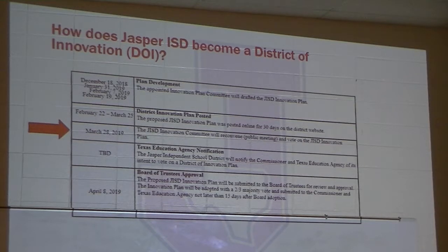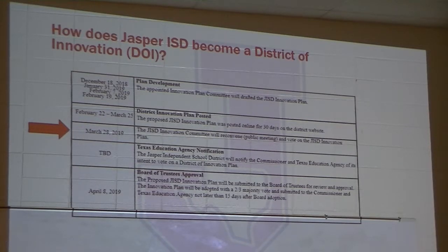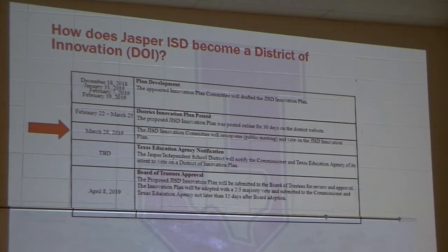Here's where we are tonight — looking at the plan at the public meeting, with our DOI committee meeting being publicly presented. From here, we've already notified the commissioner. Dr. Terry from Region 5 has been wonderful helping us stay on track with what we have to do, when we have to do things, and how it has to be done. It will be presented to the board on April 8th. We hope the proposed plan will be submitted to the board of trustees for their review and approval, to be adopted by two-thirds of the board.